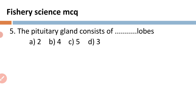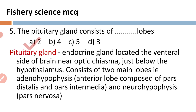Number five: the pituitary gland consists of how many lobes? A) two lobes, B) four lobes, C) five lobes, D) three lobes. The pituitary gland is the master endocrine gland, having basically three lobes but two main lobes. It is located on the ventral side of the brain near the optic chiasma, just below the hypothalamus. The pituitary gland consists of two main lobes: adenohypophysis (anterior lobe) and neurohypophysis (posterior lobe).